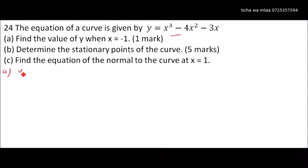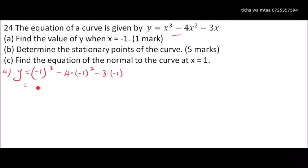So from our equation we have y = (-1)³ - 4(-1)² - 3(-1). This gives: (-1)³ = -1, (-1)² = 1 so times 4 becomes -4, and -3 times -1 becomes +3. So -1 - 4 = -5, then -5 + 3 = -2.